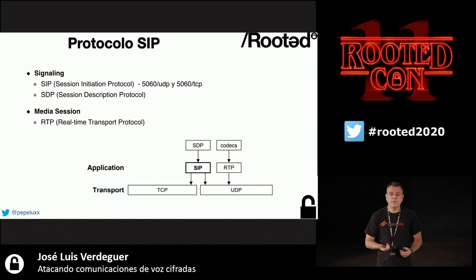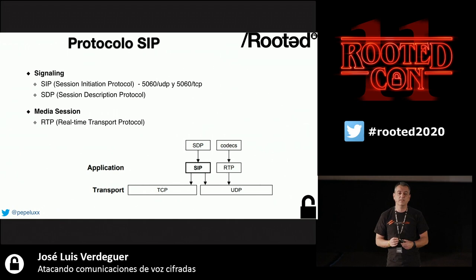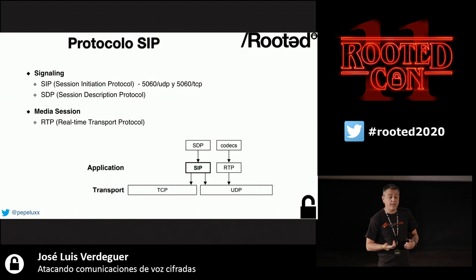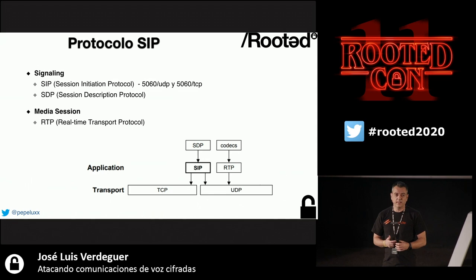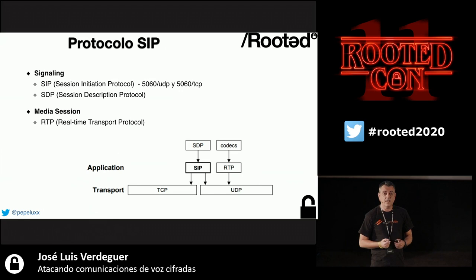To have communication within a Voice over IP system, we need two phases. First, a signaling phase — an exchange of messages with a server, like call setup and teardown. There are many protocols for this; I will focus on the SIP protocol, which is the most standard one, running over port 5060 UDP and 5060 TCP.